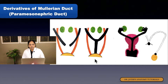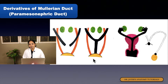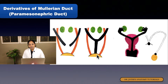The external vaginal orifice is derived from the ectoderm — from the ectodermal urogenital membrane. When the urogenital membrane ruptures, the external vaginal orifice opens. So vaginal development is a composite development: above the hymen involves the uterovaginal canal and sinovaginal bulb; below the hymen comes from the urogenital sinus; and the external vaginal orifice from ectoderm.